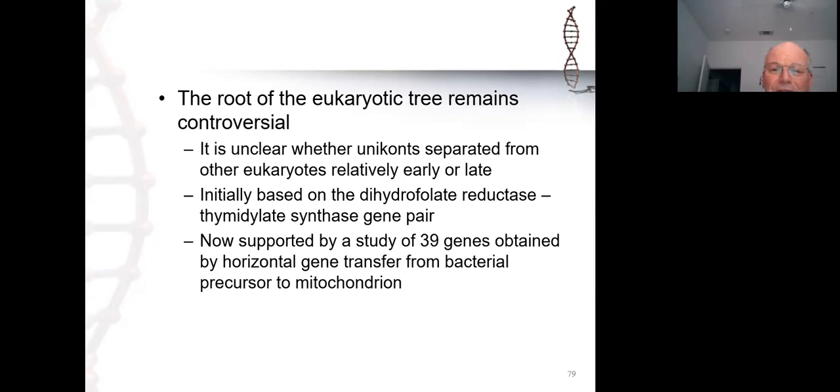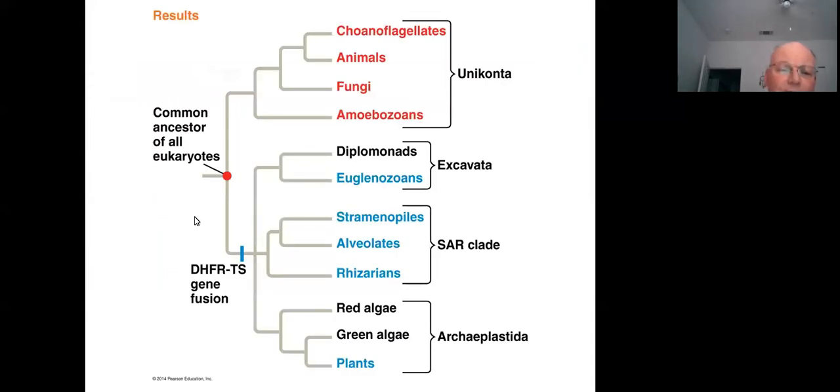The Unikonta create a lot of controversy regarding the origin of the eukaryotic tree because of an observation of a pair of genes inherited from bacteria: the dihydrofolate reductase gene or DHFR gene and the thymidylate synthase gene, labeled as the TS gene. If we take a look at the nature of the DHFR-TS gene pair in prokaryotes, these are two separate genes, and so likely two separate genes in the common ancestor of all eukaryotes. In the Unikonta these two genes remain as separate genes, but in the other three clades—Excavata, SAR, and Archaeplastida—the DHFR and TS genes have fused to create a single gene complex.